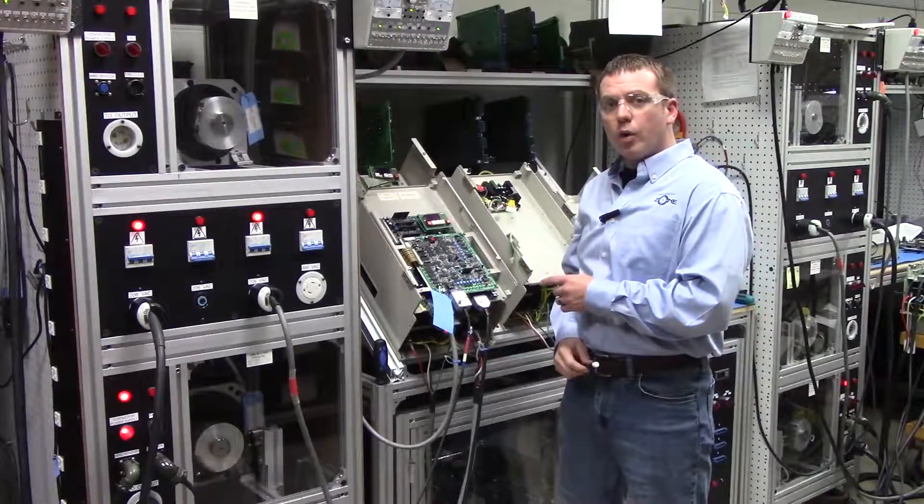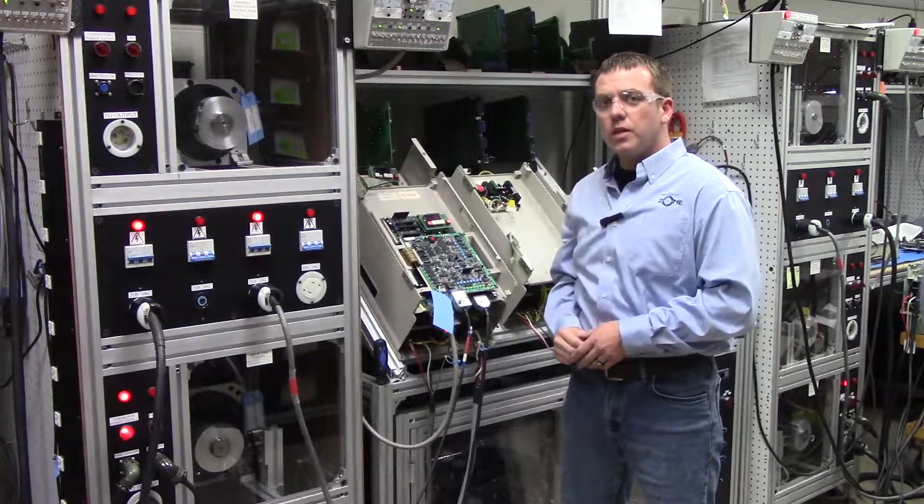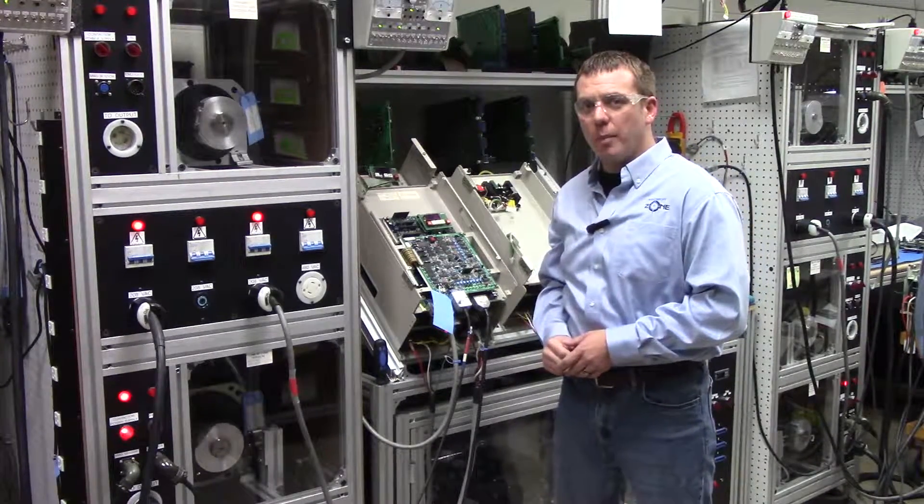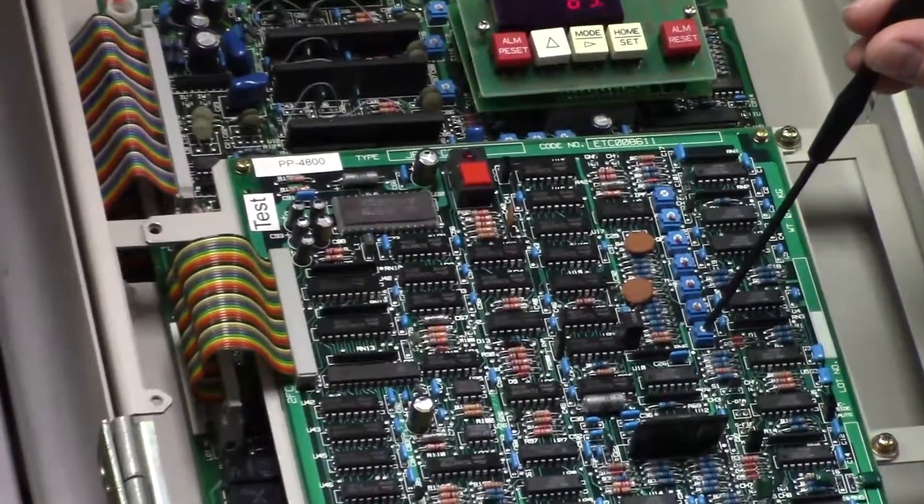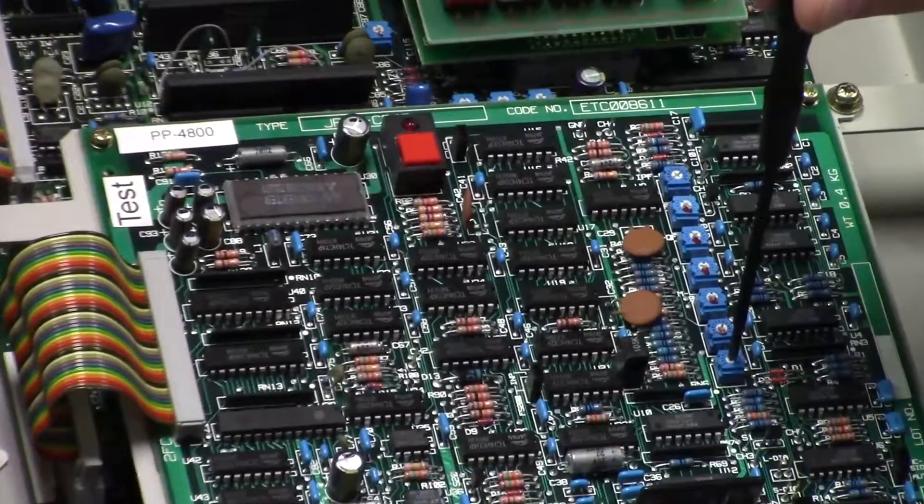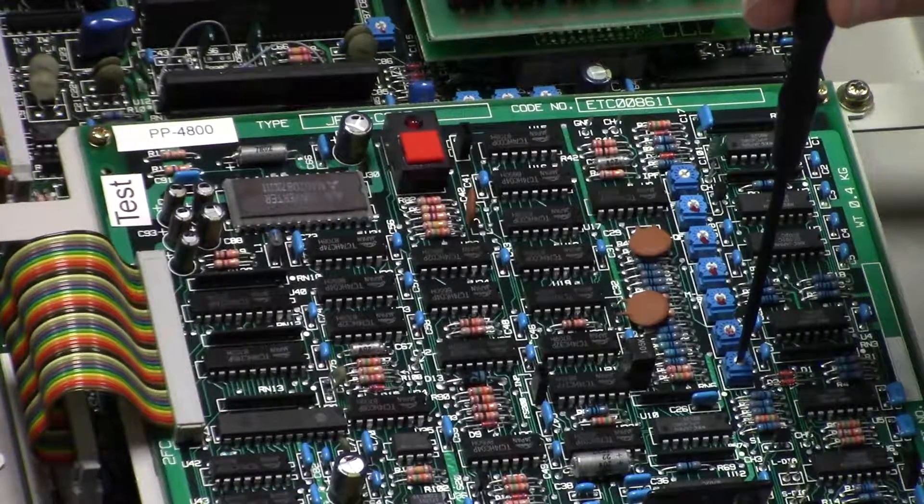On the orientation board, we're going to need to adjust the LVL potentiometer to the zero graduation. This is the LVL potentiometer. We're going to adjust it down to zero.